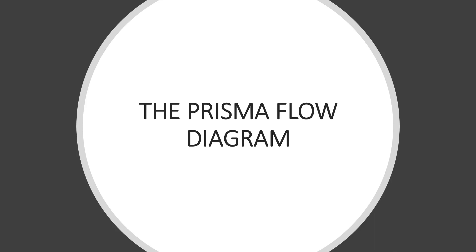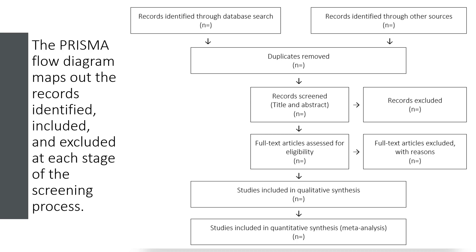After you have all your search results in your reference manager, you need to work out which studies meet your pre-specified eligibility criteria, and you should do this systematically and without bias. Throughout the selection process, keep careful records about the studies you exclude — you need a summary of the total number of records identified at each stage, the number excluded at each stage, and a reason for any articles excluded, especially when assessing the full text versions.